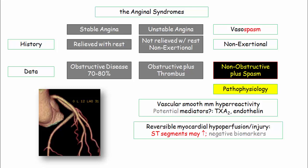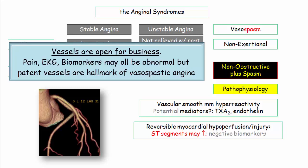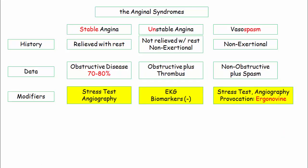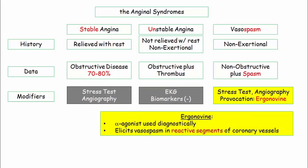However, the hallmark of vasospastic patients is the absence of occlusive disease, reported with either a negative stress test or clean angiogram. If a patient has nocturnal chest pain with ST-segment elevation and minor elevation of biomarkers, and they want you to choose vasospastic disease, they will need to prove the absence of occlusion. For testing of vasospastic angina, two pieces of data will be presented: first, lack of flow-limiting occlusion via negative stress test or clean vessels on arteriography; second, provocative testing with a vasoconstricting agent — on USMLE, ergonovine is the agent of choice. Ergonovine is an alpha agonist that elicits vasospasm in reactive segments of the coronary vessels.